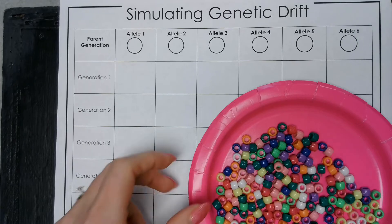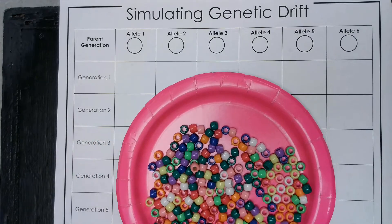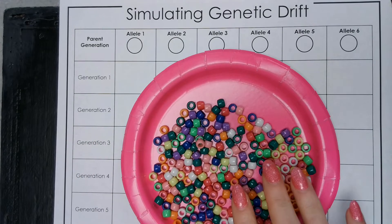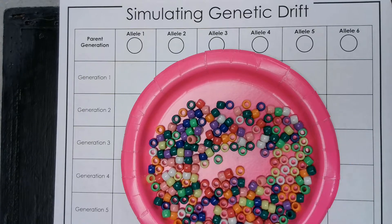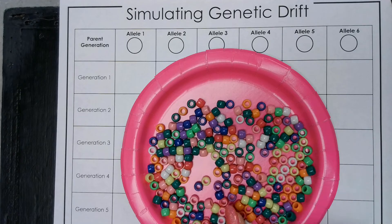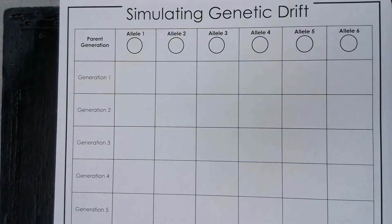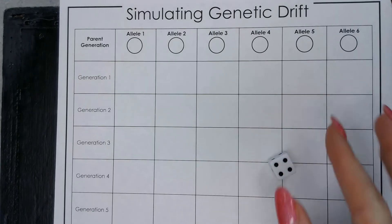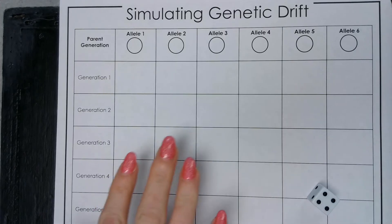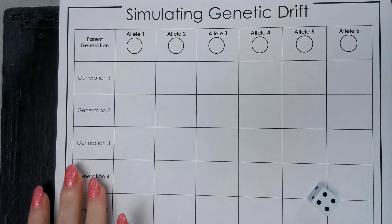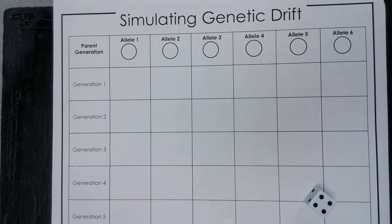So let's dive in. What we're going to need for this lab is some multicolored beads — this represents genetic variability in a small population. These beads are different colors. We also have a six-sided dice, and then we've got our genetic drift table that's going to allow us to see what this does to a population over time.